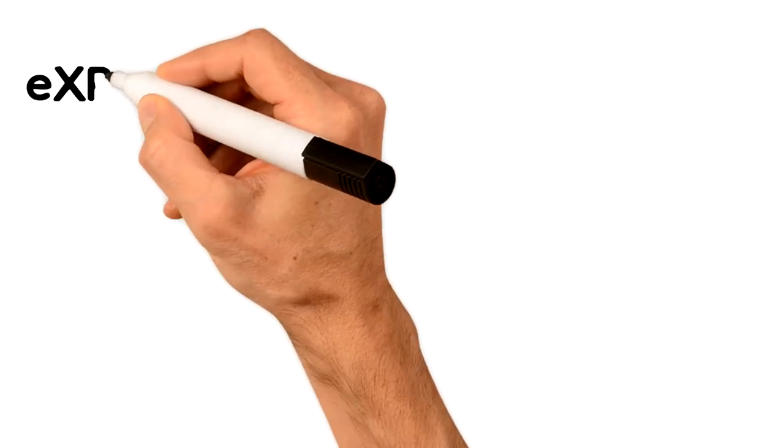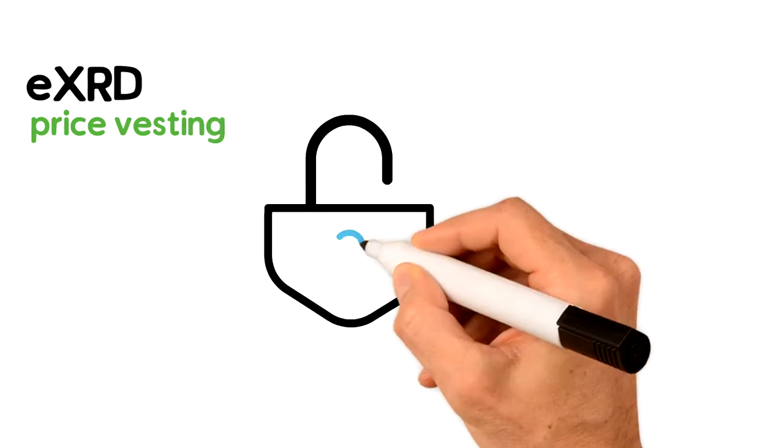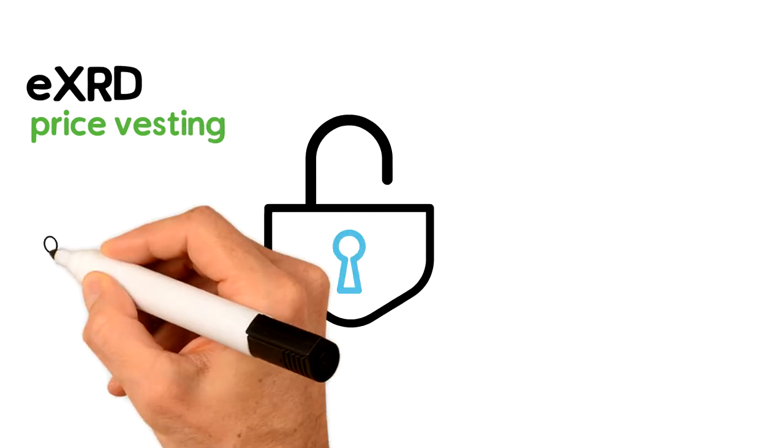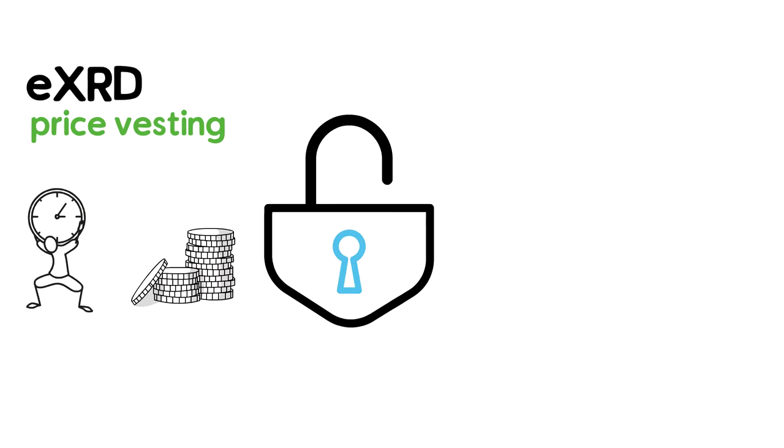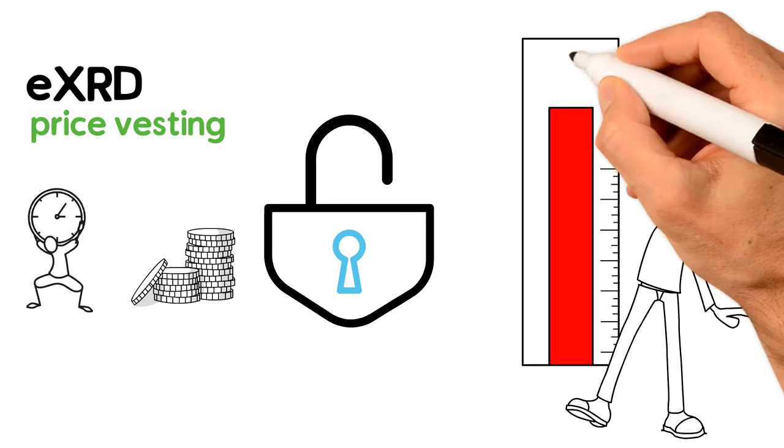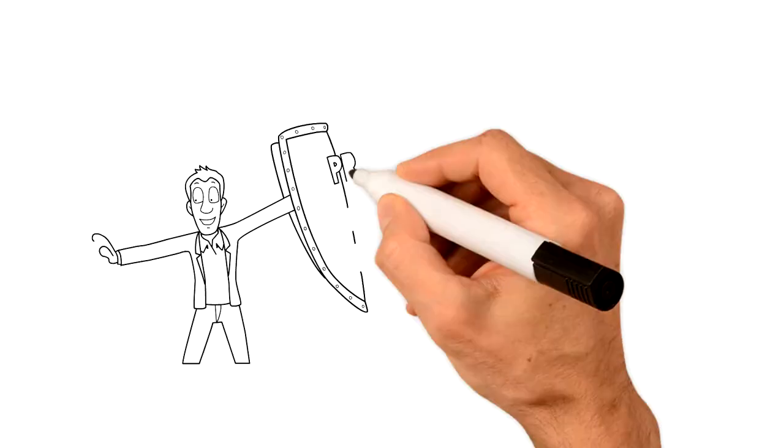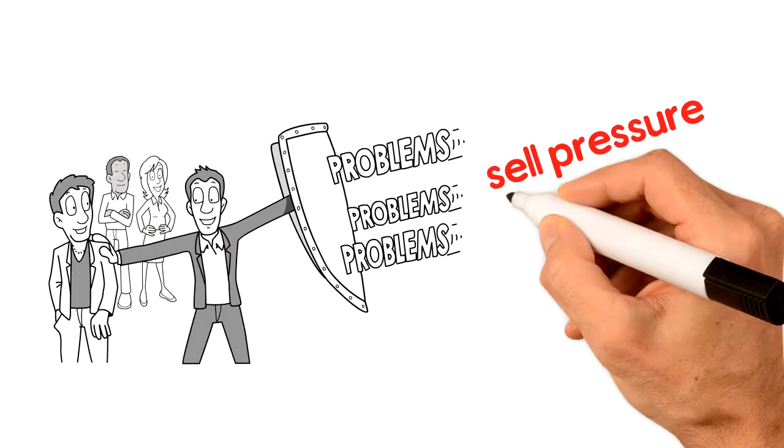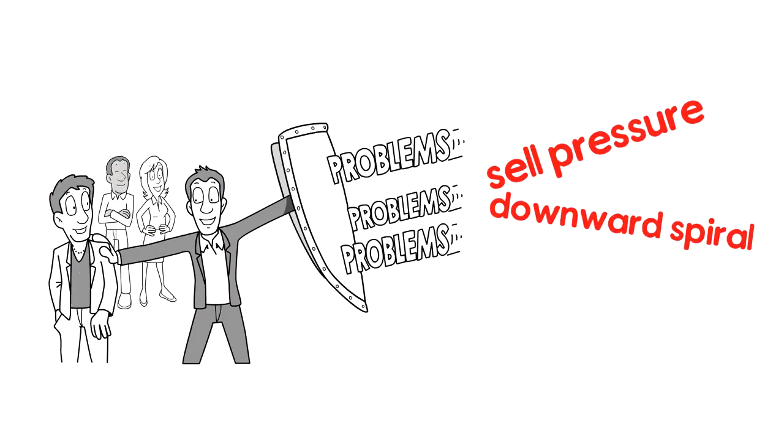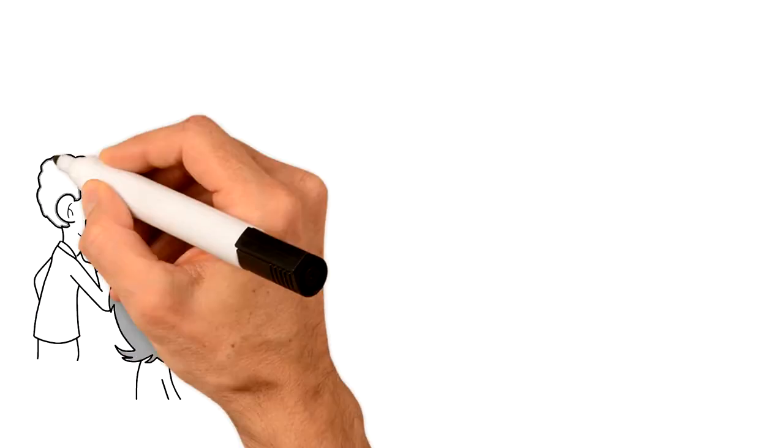The EXRD Price Vesting only unlocks tokens when certain price levels are met over an extended period of time. This means that tokens only unlock if the price is moving up, so investors are protected from major sell pressure and a downward spiral.